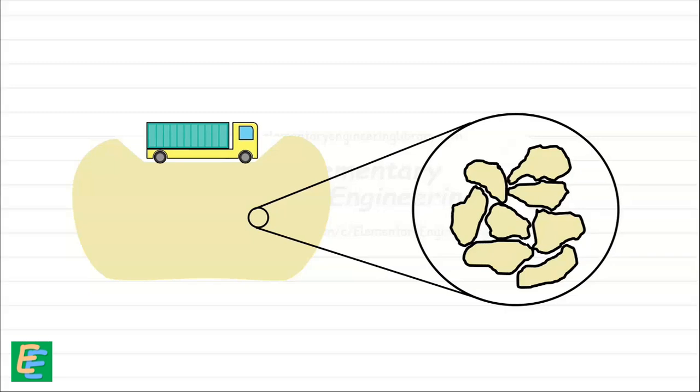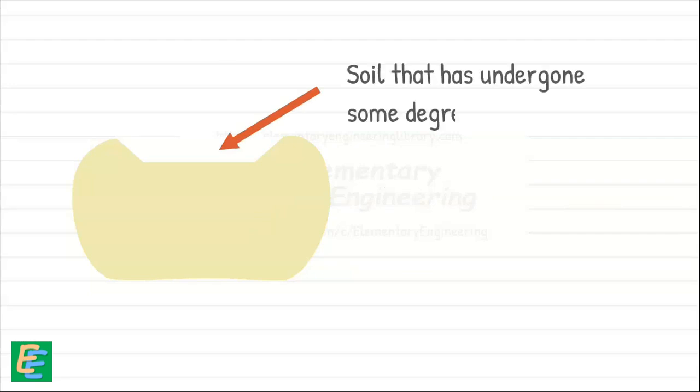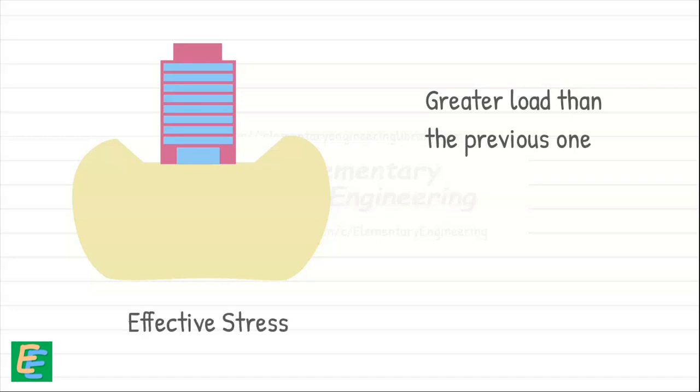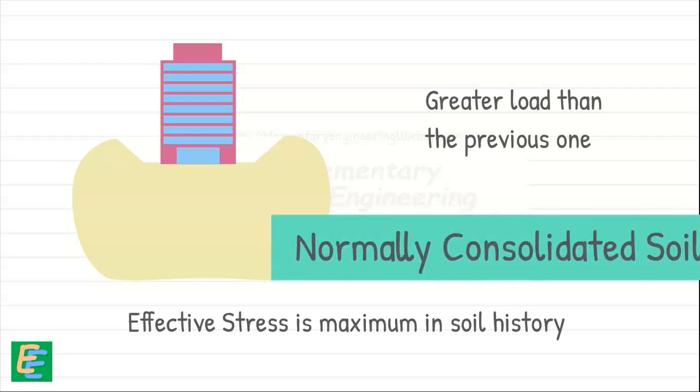Now suppose that the load has been removed for any reason, then we have a soil that has undergone some degree of consolidation. Now let's say we load the soil again but with a greater load than the previous one. If the effective stress generated by this new load is the maximum that the soil has ever experienced in its history, the soil is called normally consolidated soil.